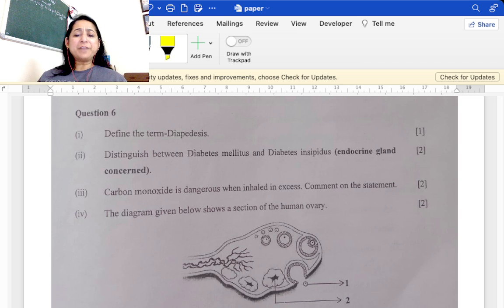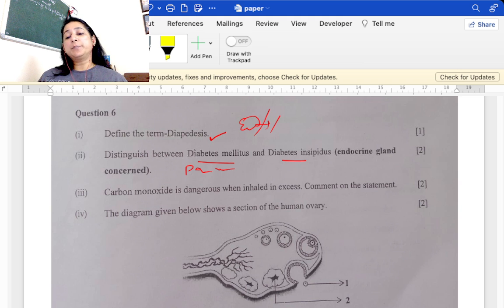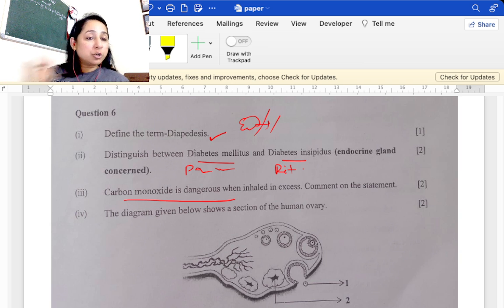Define the term diapedesis: oozing out of WBC from the walls of capillaries is known as diapedesis. Distinguish between diabetes mellitus and insipidus: mellitus, endocrine gland is pancreas; insipidus, it is pituitary gland. Carbon monoxide is dangerous when inhaled. This is a two-mark question. Carbon monoxide combines with hemoglobin and forms a complex. Because hemoglobin has strong affinity to carbon monoxide, it binds with it first, so there is no place left for oxygen to bind, which leads to carbon monoxide poisoning.